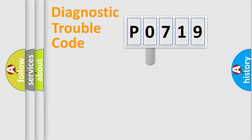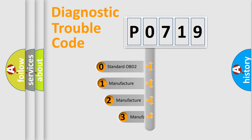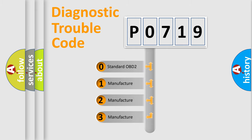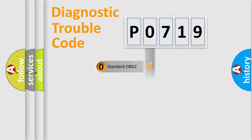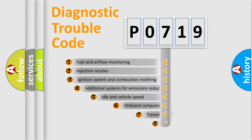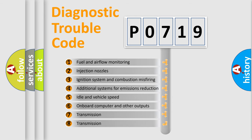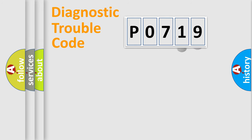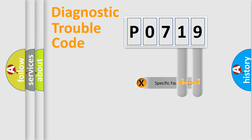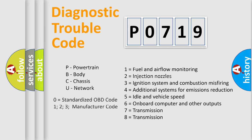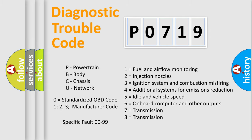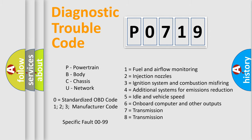This distribution is defined in the first character of the code. If the second character is expressed as zero, it is a standardized error. In the case of numbers 1, 2, or 3, it is a manufacturer-specific error. The third character specifies a subset of errors, and this distribution is valid only for the standardized DTC code. Only the last two characters define the specific fault of the group.